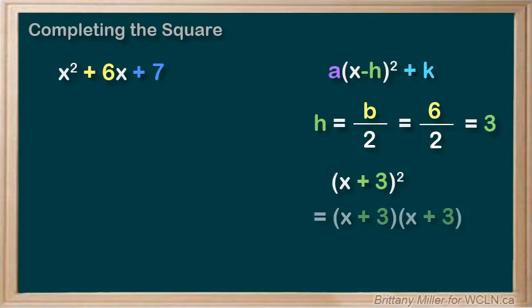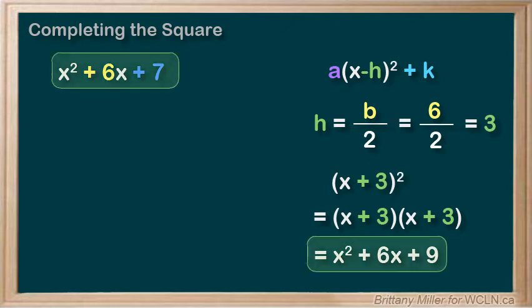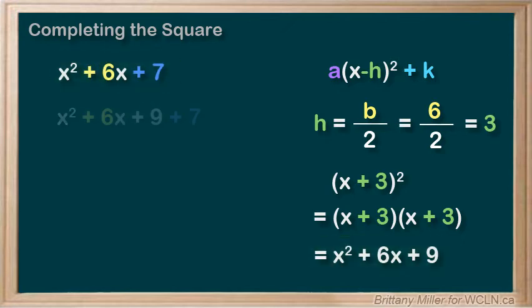Well if we expanded it, x plus 3 squared is equal to x squared plus 6x plus 9. That's pretty close to what we have so how can we make that? Well why don't we just add a 9 into our equation? Is that allowed? No.